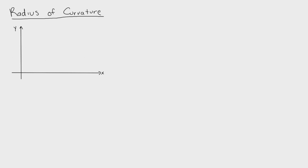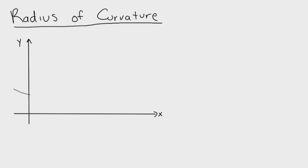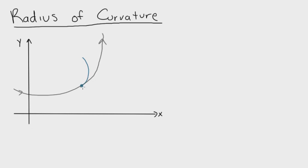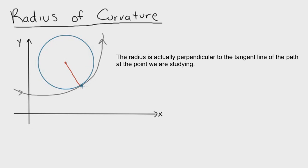The first thing we're going to do is define some arbitrary path — the path of a particle. Then we define a point we're interested in to find the radius of curvature. To find the radius of curvature, we draw a circle tangent to that point on the graph. The circle's radius goes from the center to that tangent point, and we define this radius as rho.